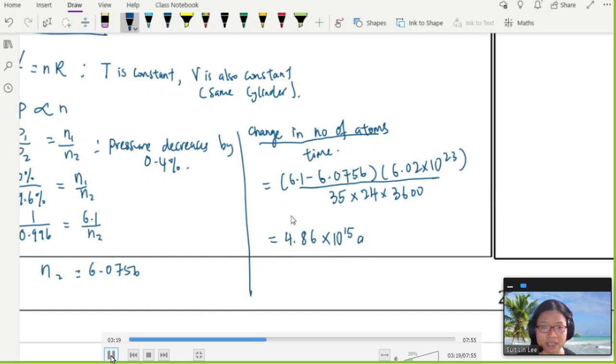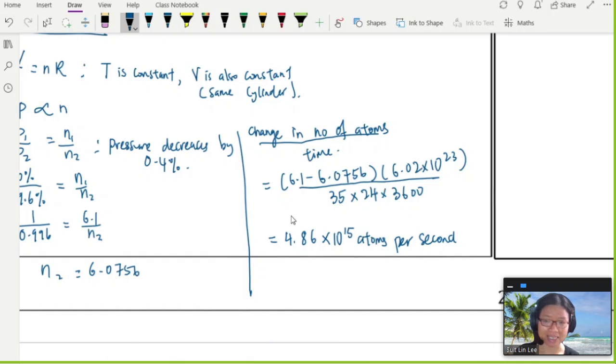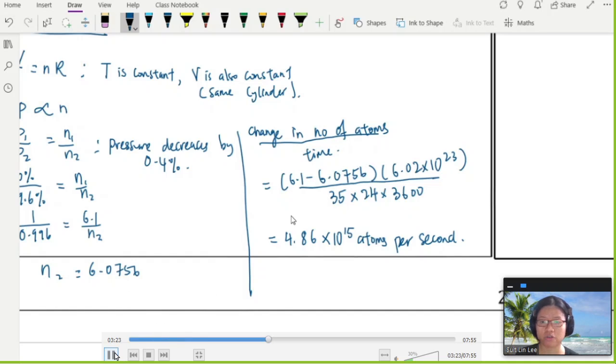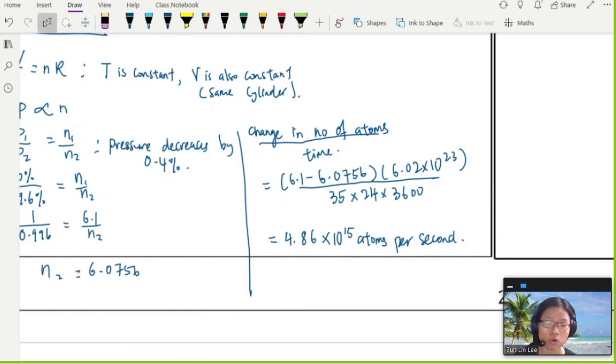Press your calculator and you will get 4.86×10^15 atoms per second. You might be thinking, wow, this number is very big. It's very big because particles - the numbers are very big. That's why your Avogadro constant 6.02×10^23 is a very big number, because in one mole you have many, many, many gas particles.